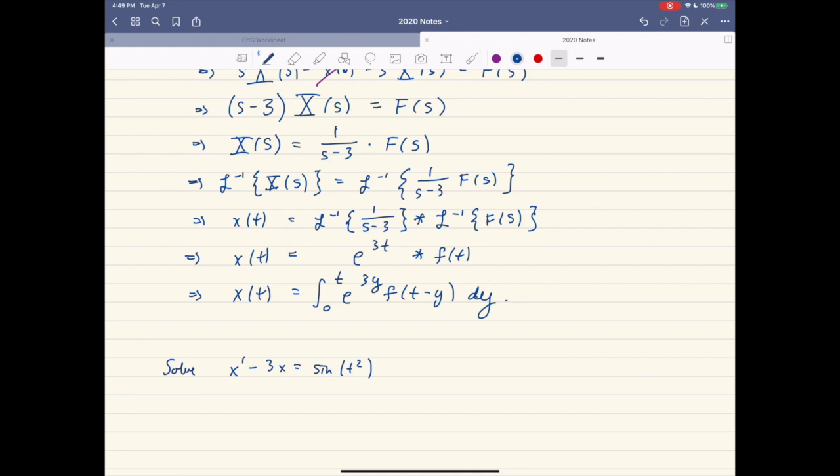Well, what we can do is we can run through the same process. And it turns out that x is going to be the convolution of e to the 3t with our function little f. So that's the integral from 0 to t, e to the 3y, sine of t minus y squared dy. And then that gives us a nice formula for the solution of our differential equation. This again is called Duhamel's method.